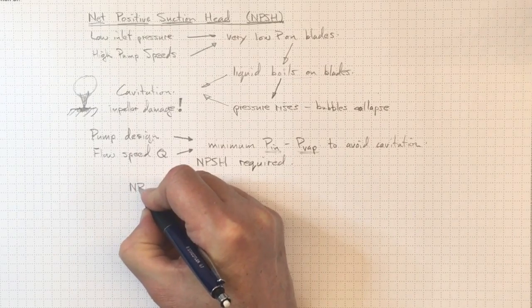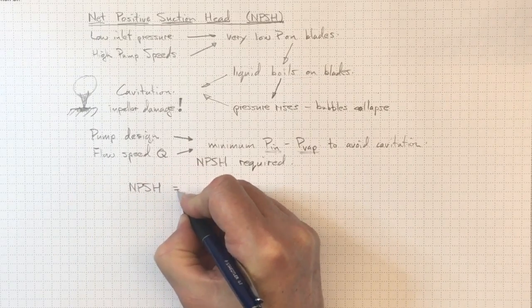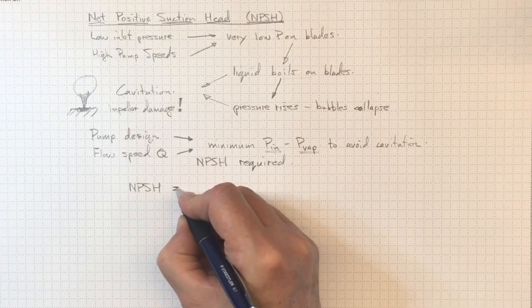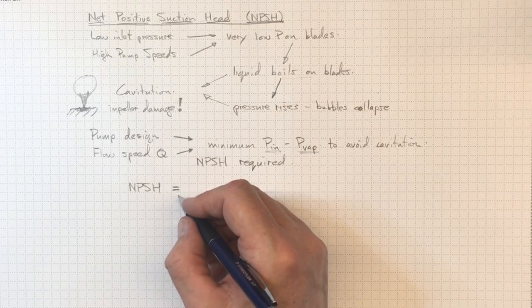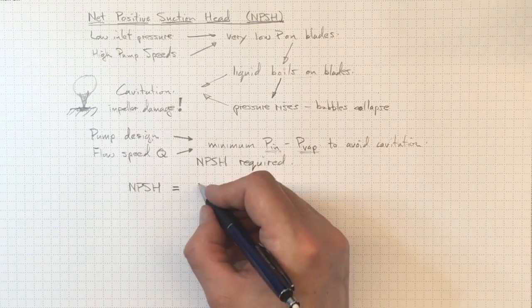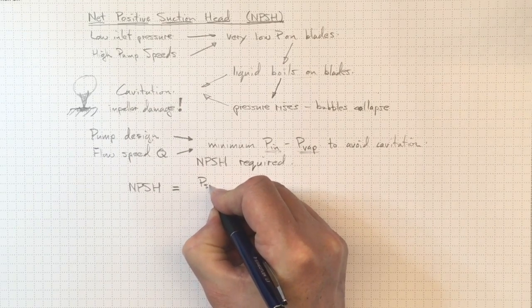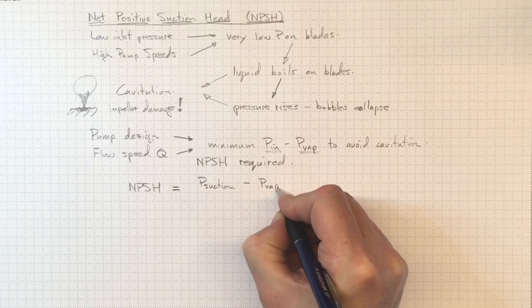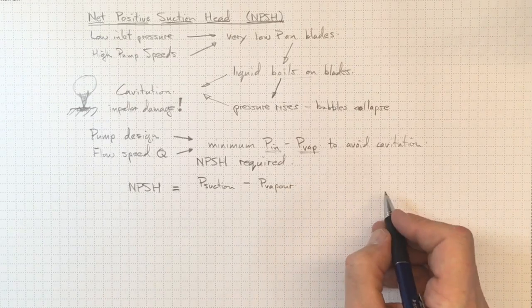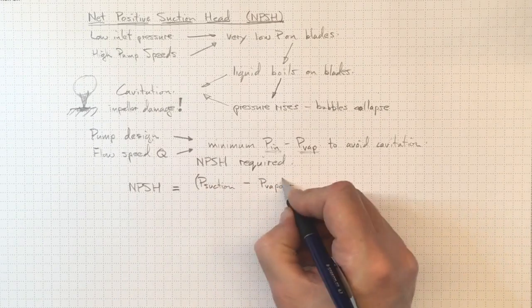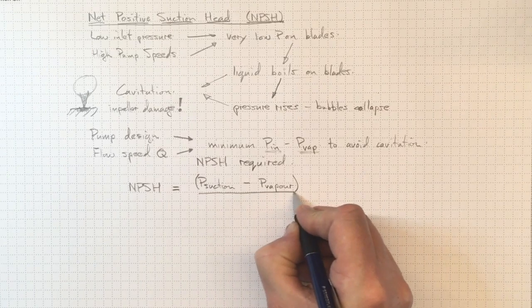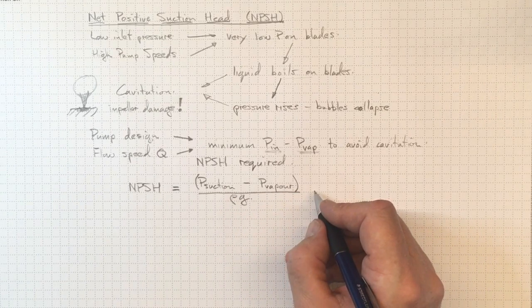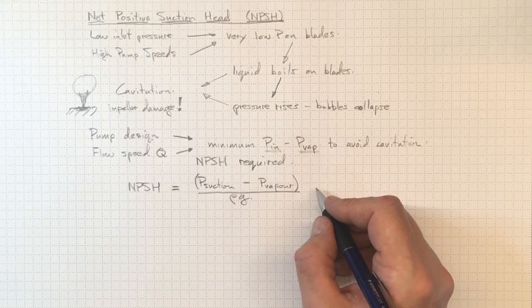Now the net positive suction head is put in terms of head or elevation, increase in height, for the same reasons that we're using head for all of our pump calculations. It's just the pressure in the suction of the pump minus the vapor pressure for the fluid at that particular temperature divided by rho g to put it in terms of head instead of in terms of pressure. Now let's look at how we calculate this.